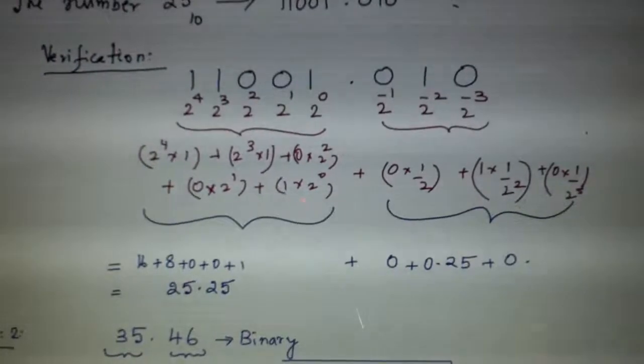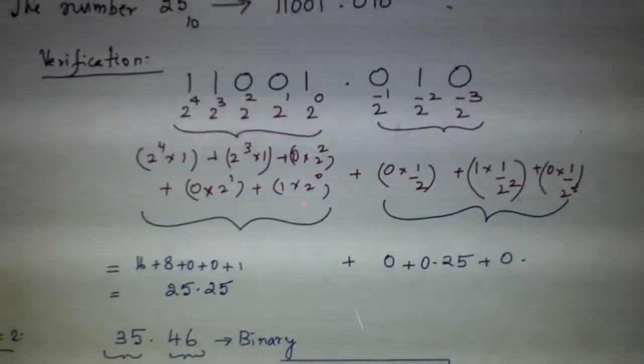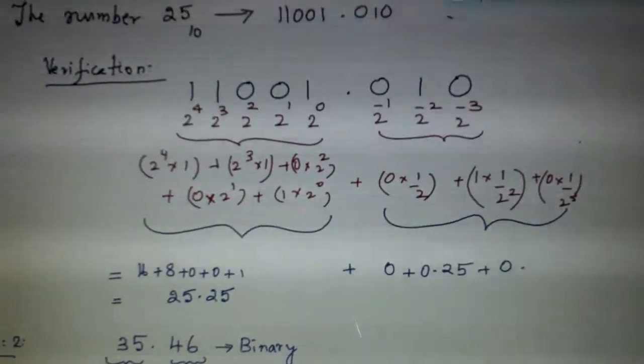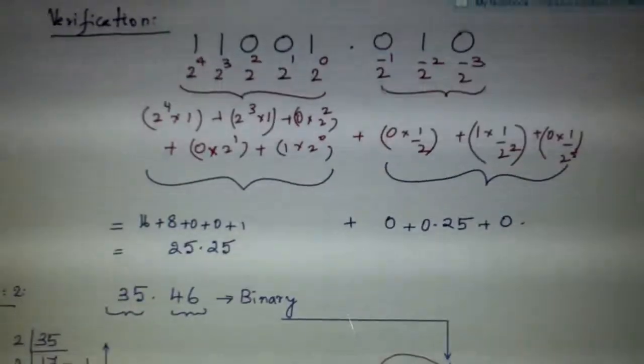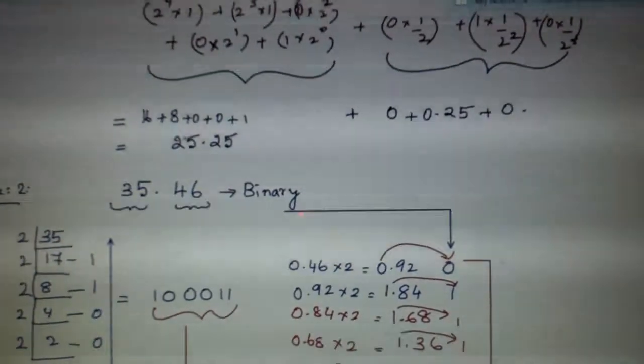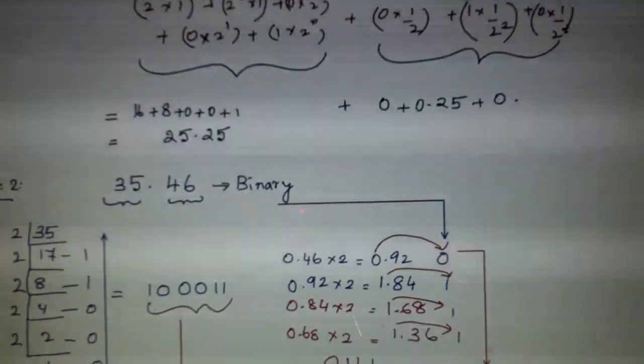So do the multiplication. This is 0, 1/2, 1/4, 1/8. So 1/2^3. You do this. This is what you are getting. So when you add, this part is 25, this part is 0.25.